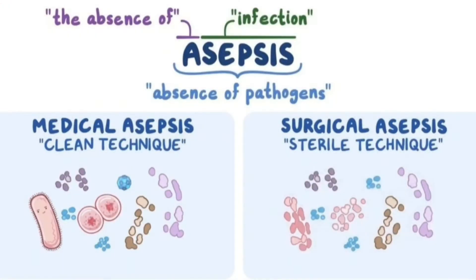The first term is asepsis. As the name suggests, A plus sepsis — that means all those procedures which are carried out before doing any surgical procedure, so as to prevent the spread of infection. For example, we do the sterilization of instruments, autoclaving of instruments, wearing gloves, and disinfection of the whole room before carrying out any surgical procedure. These are all examples of asepsis.